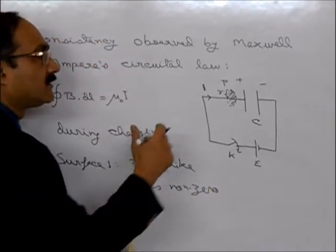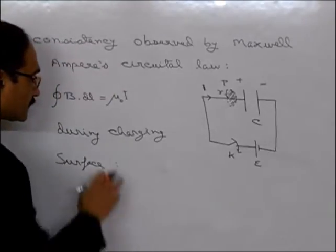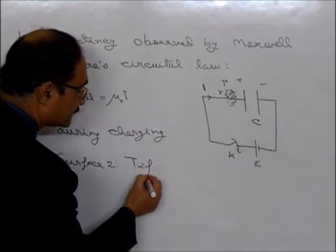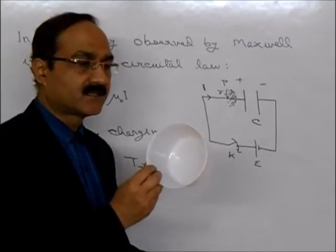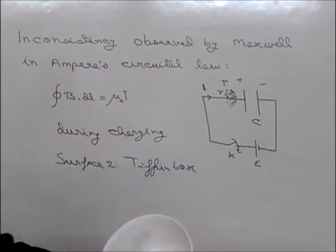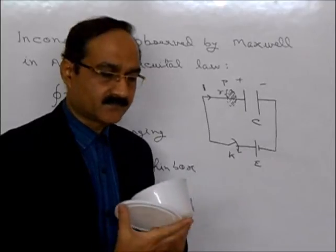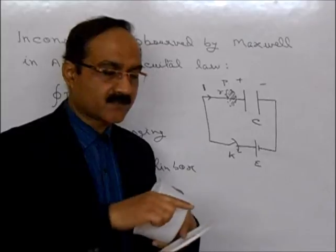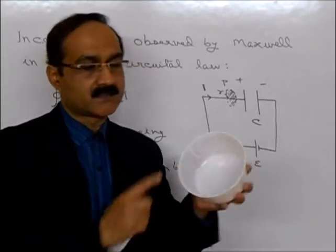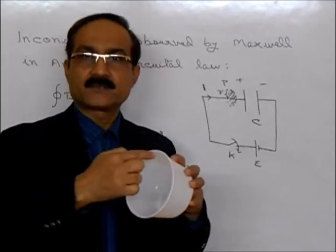Maxwell then applied a second surface — let's call it surface 2 — which is like a briefcase-box shape. Its perimeter is the same as the perimeter of surface 1. The perimeter of surface 2 is the same as the perimeter of surface 1.